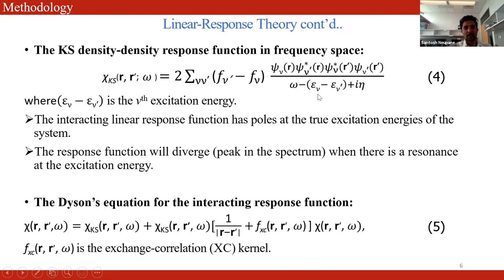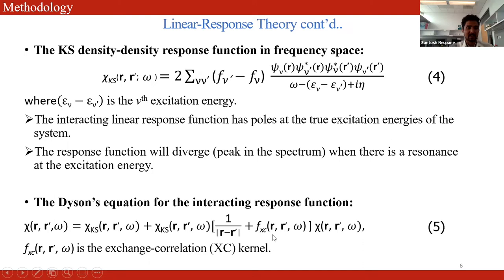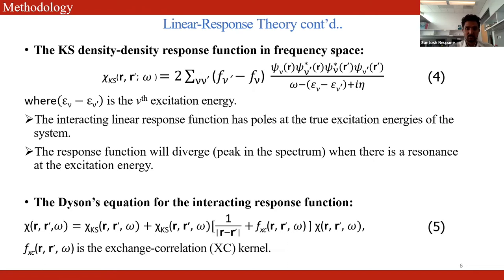The Kohn-Sham response function has poles at the Kohn-Sham excitation energies of the system. Similarly, the interacting linear response function has poles at the true excitation energies. The response function diverges — that is, it gives a peak in the spectrum — when there is a perturbation at the excitation energy. With Dyson's equation, the interacting density-density response function can be related to the non-interacting response function through the exchange-correlation kernel. Once we have the exchange-correlation kernel, we can obtain the response function through Dyson's equation.